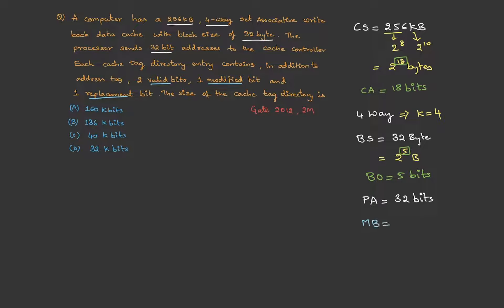So, meta bits, we have valid bits, modified bits and replacement bits. Valid it is 2, modified is 1 and replacement is 1. So, the total meta bits is 4 bits.